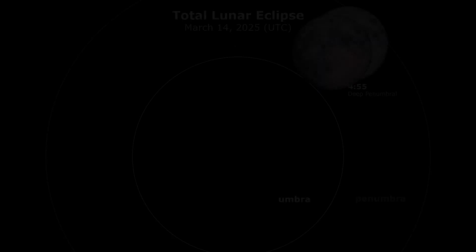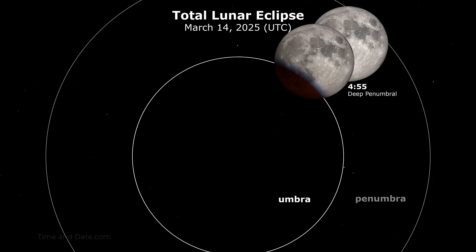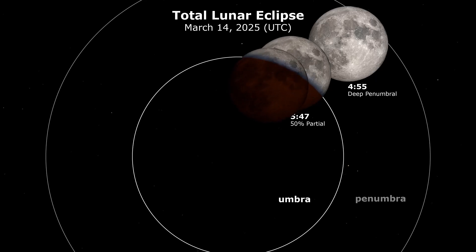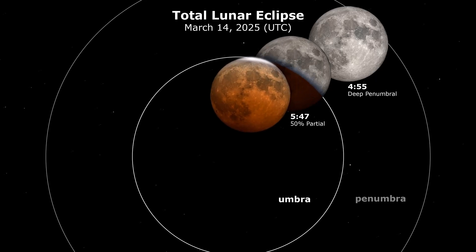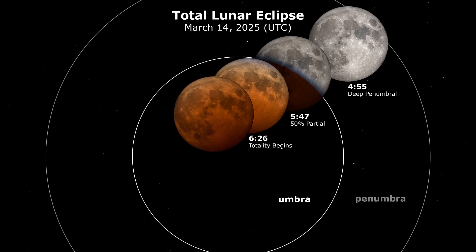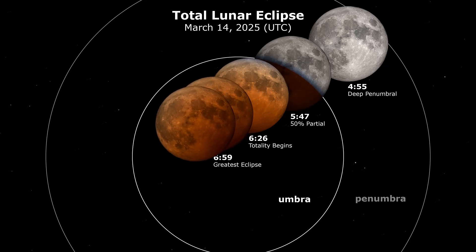The March total lunar eclipse is not expected to be very dark because the moon does not touch the deepest part of the umbra, which would be the center of the circle that you see right here. So expect the color to be kind of towards a brighter red or a coppery color.